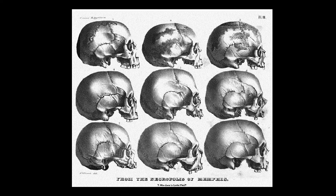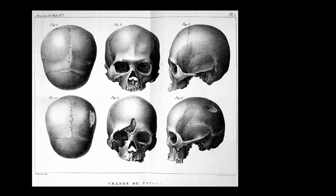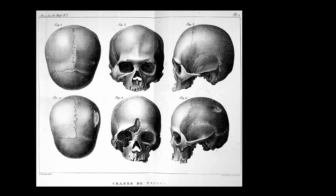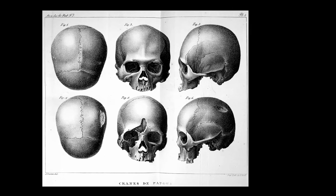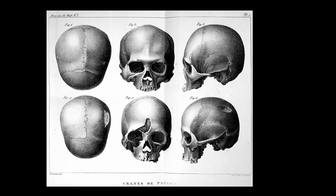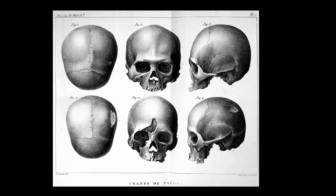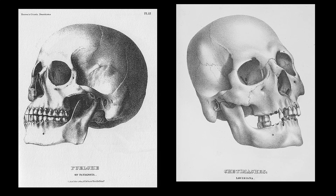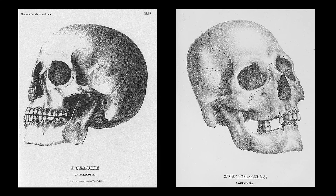This fueled speculation that early Americans may have descended from multiple migrations. But Naya's mitochondrial DNA told a different story — she belonged to haplogroup D1, a genetic lineage found only in modern Native Americans. This discovery helped solve a mystery that had puzzled scientists for decades: why do some of the oldest skulls in the Americas look so different from later populations? The answer may lie not in separate migrations, but in natural changes in appearance over time caused by climate, diet, and isolation.